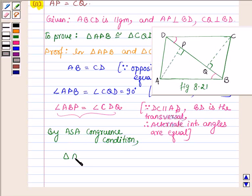triangle APB is congruent to triangle CQD.